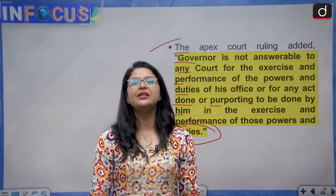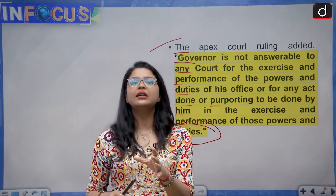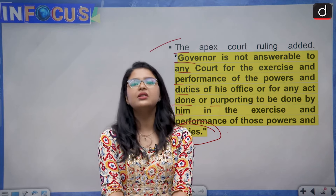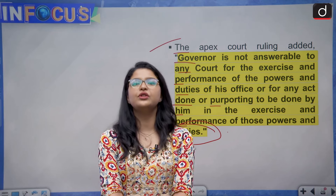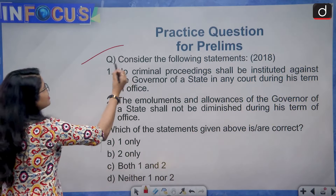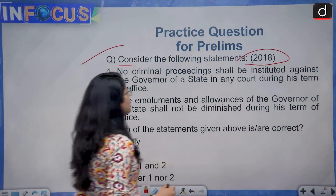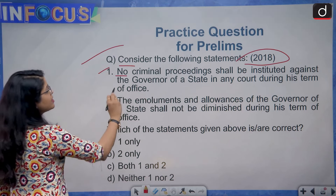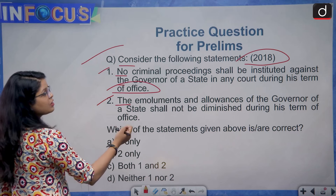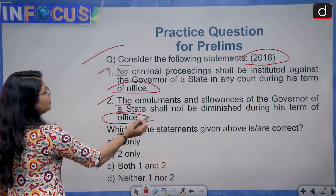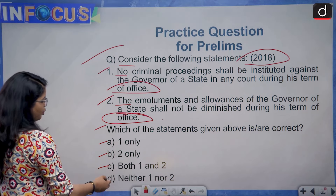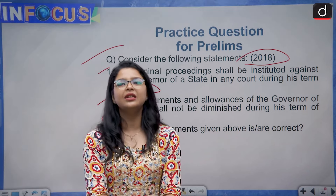With this, we come to the conclusion of today's discussion. We have seen the complaint against the sitting governor of West Bengal, examined constitutional provisions regarding the governor, discussed Article 361 in detail, and seen the Supreme Court's stand on the issue. Now, a practice question for your prelims examination — this question was asked in 2018. Consider the following statements: Statement 1 — No criminal proceedings shall be instituted against the governor of a state in any court during his term of office. Statement 2 — The emoluments and allowances of the governor shall not be diminished during his term of office. Which of the statements is correct? Option A: 1 only, Option B: 2 only, Option C: Both 1 and 2, Option D: Neither 1 nor 2. Kindly drop the correct answer in the comment box below.